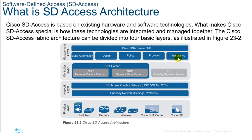The Cisco ISE, or Identity Services Engine, is a secure network access platform enabling increased management awareness, control, and consistency for users and devices accessing the organization's network. ISE is an integral and mandatory component of SD-Access for implementing network access control policy. ISE performs policy implementation, enabling dynamic mapping of users and devices to scalable groups and simplifying end-to-end security policy enforcement.